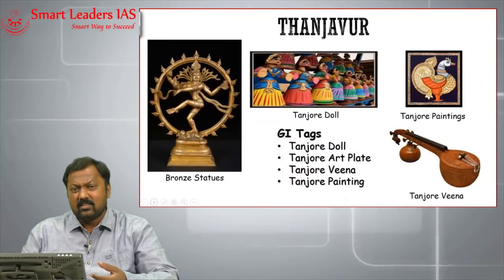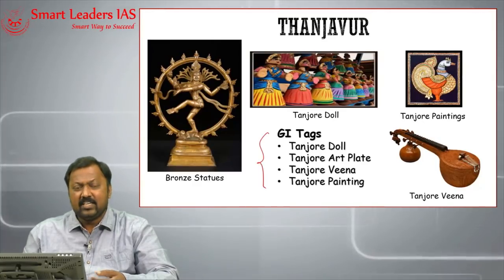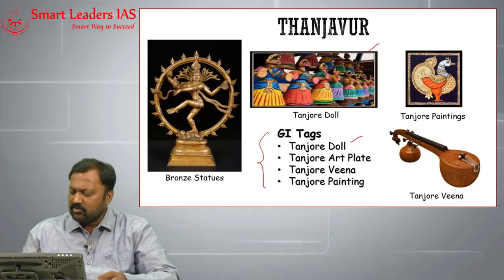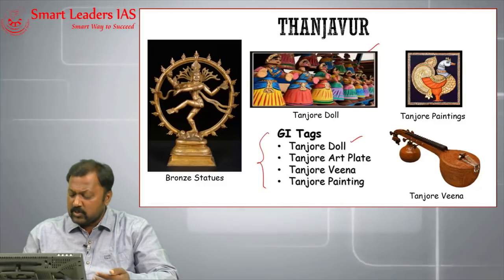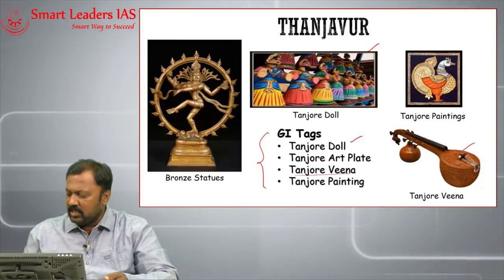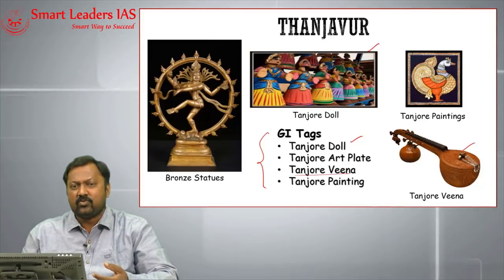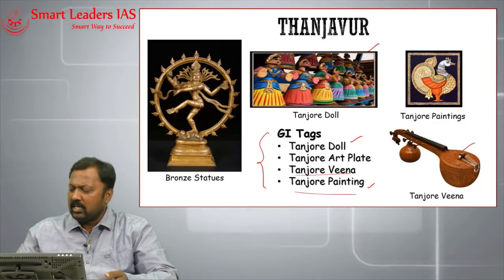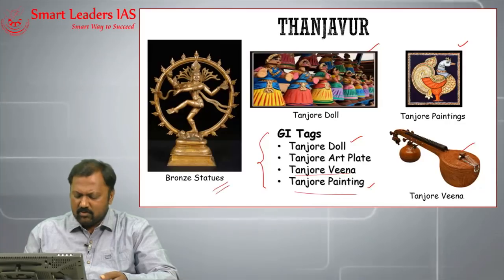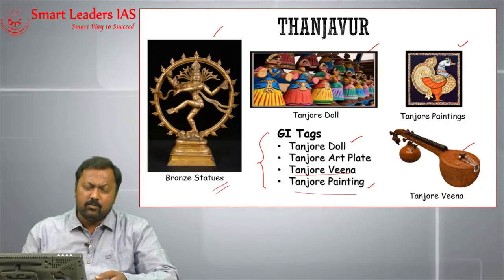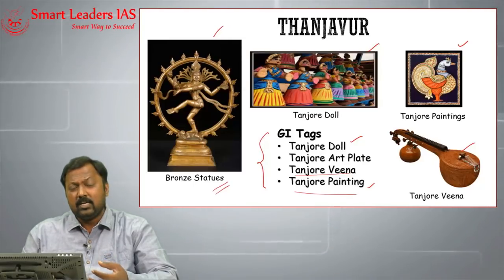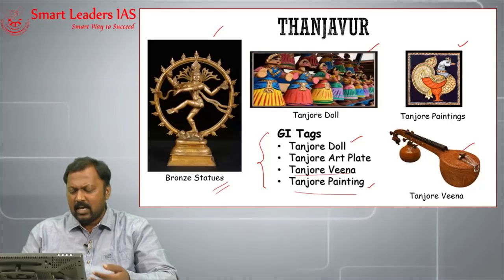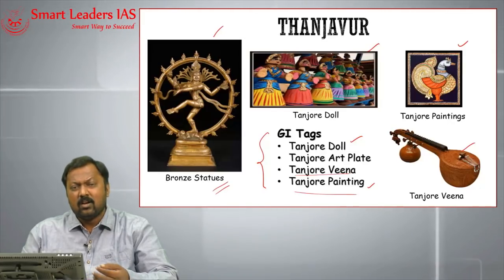Tanjavur also has several GI tags: the Tanjavur doll (a dancing doll), Tanjavur art plate, Tanjavur Veena — the instrument associated with Goddess Saraswati — and Tanjavur painting, which is a form of glass painting. Tanjavur is also known for manufacturing bronze statues for more than 2,000 years using a technique called the lost wax method, which has been known to Indians for a very long time.